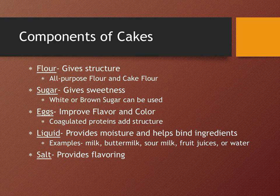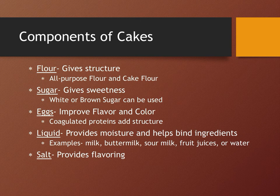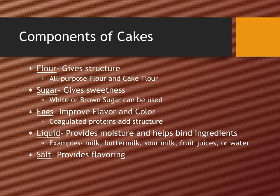Eggs improve the flavor and color of the cake. Their coagulated proteins add structure to the cake. In angel food cake and sponge cakes, the eggs act as leaveners and help in giving volume. Liquids provide moisture and help bind the ingredients together. Examples of liquids used are milk, buttermilk, sour milk, fruit juices or even water. Then comes salt, which helps in providing flavor to the cake.